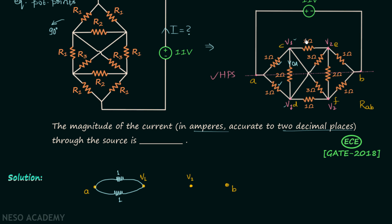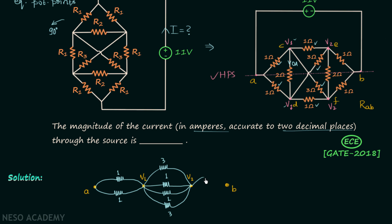After accounting for the neglected resistors, the remaining connections are: between C and E there is a 1 ohm resistor, between D and F there is a 1 ohm resistor, between D and E there is a 3 ohm resistor, and between C and F there is a 3 ohm resistor. Moving forward, between E and B there is a 1 ohm resistor and between F and B there is another 1 ohm resistor — giving two 1 ohm resistors in parallel between the V2 node and point B.